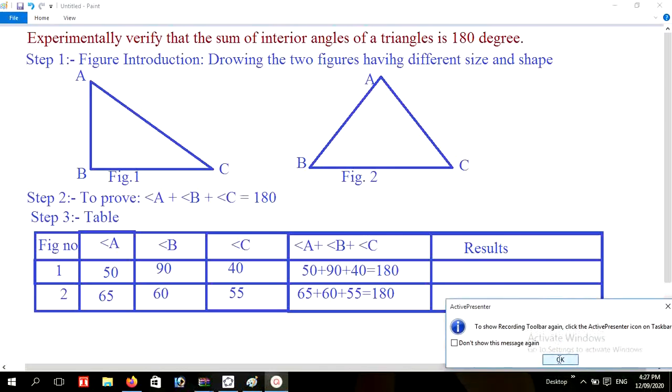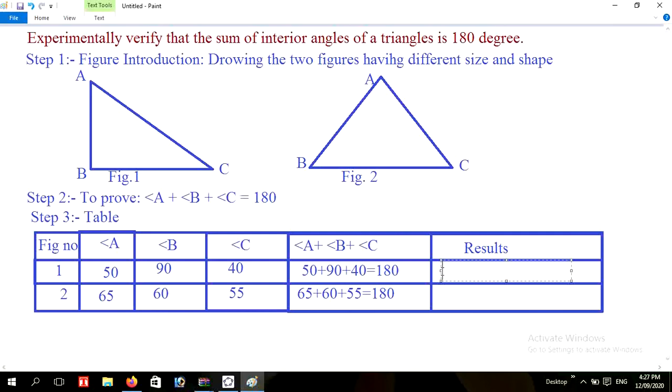And write conclusion. Conclusion is angle A plus angle B plus angle C equals to 180 degrees. And write similar here: angle A plus angle B plus angle C equals to 180 degrees. And last step, step 4 is conclusion.